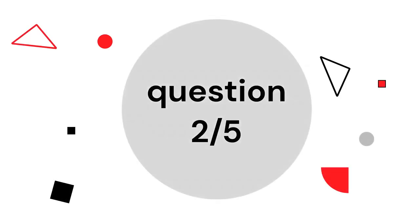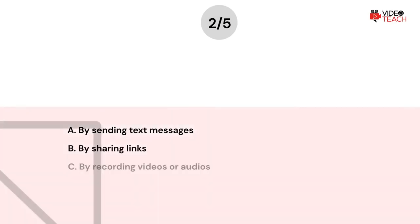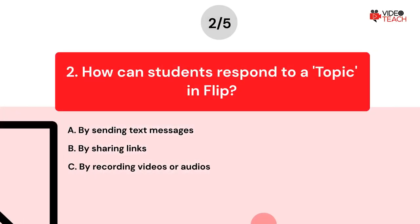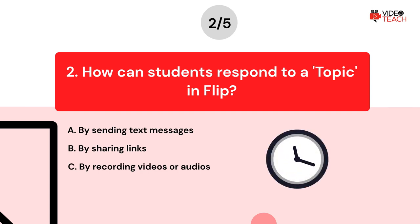Question number two. How can students respond to a topic in FLIP? Option A: By sending text messages. Option B: By sharing links. Option C: By recording videos or audio. Now you have about 15 seconds to think about your answer.